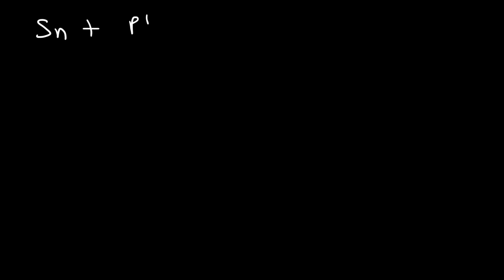Another alloy to talk about is solder. If you combine tin and lead you can create the alloy known as solder. This is very useful if you want to attach a wire to a metal contact or metal surface — you can melt the solder which will hold the wire in place. I came across a table showing the different melting points of solder with varying percentages of tin and lead.